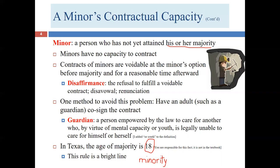Bob's twin Brad is identical but has had a very different path. Brad isn't interested in business, hasn't taken business courses, and is relatively unsophisticated in making business decisions — more like the average 17-year-old. Yet despite his lack of sophistication, he will obtain contractual capacity at the exact same moment as Bob: 12:01 a.m. on the morning of his 18th birthday. The law doesn't do an individualized analysis — it's an objective standard based on birth date.